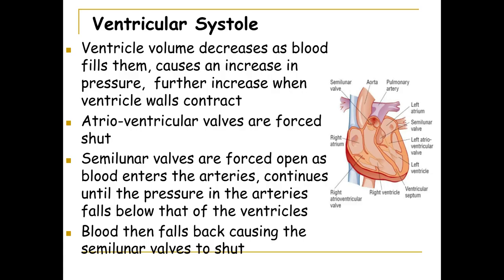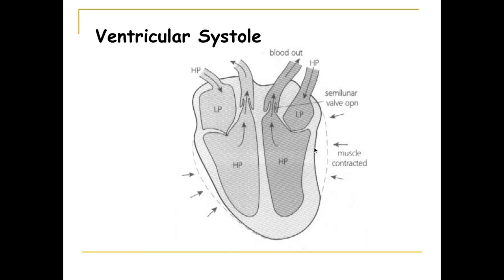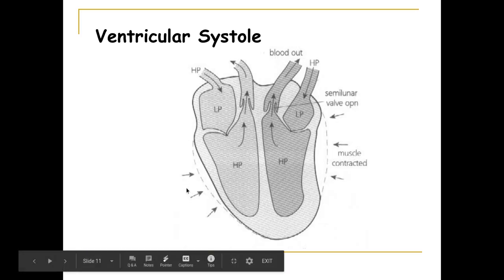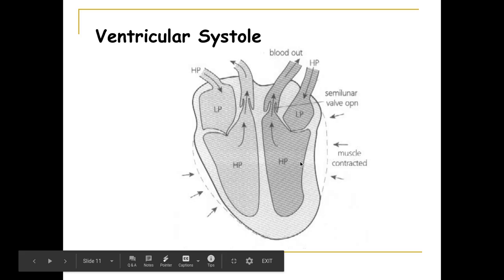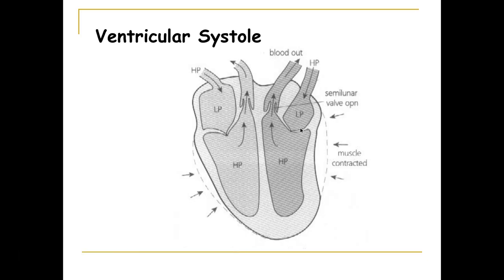During ventricular systole, the ventricular wall — the cardiac muscle — contracts. This causes high pressure in the ventricles, which forces the atrio-ventricular valves to close, preventing backflow of blood back into the atria. The semilunar valves at the base of the arteries now open, and blood is forced from the ventricles through the semilunar valves into the arteries.